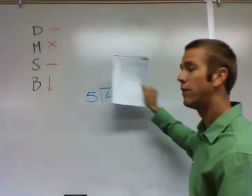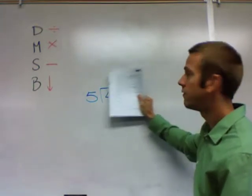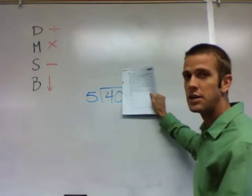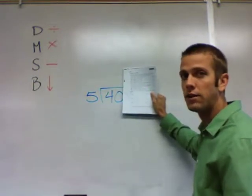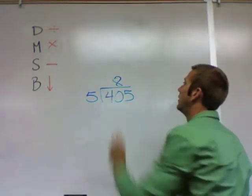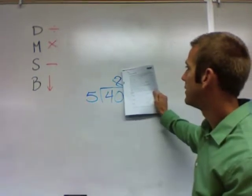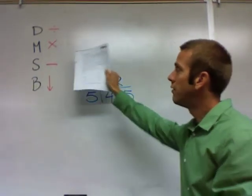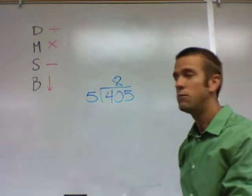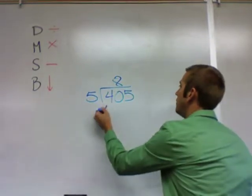So our D, our first step dividing, isn't 5 into 405. It's 5 into 40. So how many times does 5 fit into 40? 8 times. So above the 0 where I ended that column, I'm going to write 8. Above the 0. Now we've done divide. How about multiply? Then you multiply the 8 times the 5. 8 times 5 makes 40.